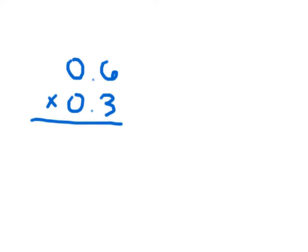Our next step is to multiply ignoring those decimal points. So we just have 0.6 and 0.3, which is really just 6 times 3. Because we wouldn't write 6 as 06 and we wouldn't write 3 as 03 — those zeros are just placeholders. So we just multiply 3 times 6, which is 18.